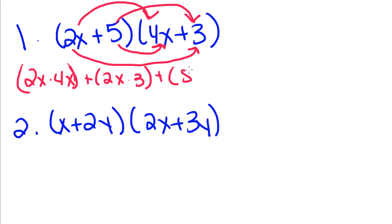Plus the inside, which is 5 times 4x, plus the two last terms, 3 times 5. So 2x times 4x gives me 8x squared, plus 2 times 3, 6x, plus 5 times 4, 20x, plus 15.